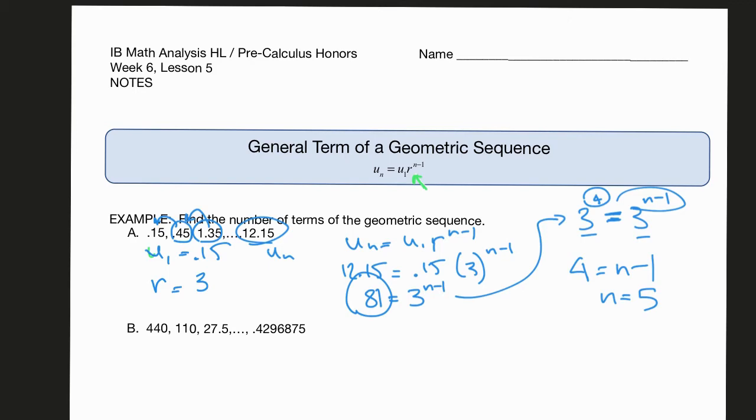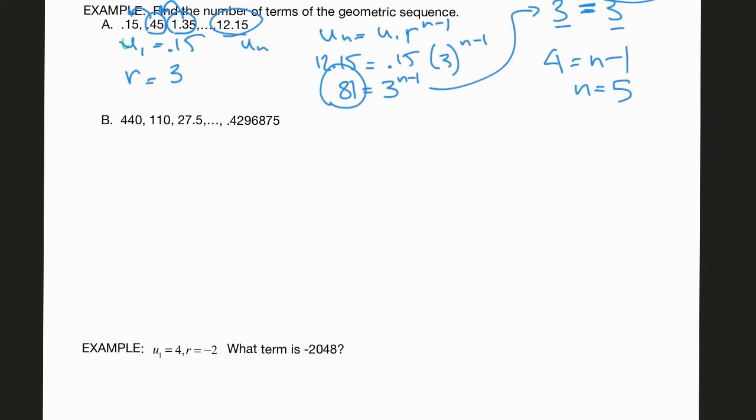Okay so let's try part b. Let me move this up a little bit. In this example the first term is 440. The ratio is 1/4. Again you can figure that out with your calculator. Take any term and divide by the term before it. So here's the formula: u sub n equals u sub 1 times r to the n minus 1.